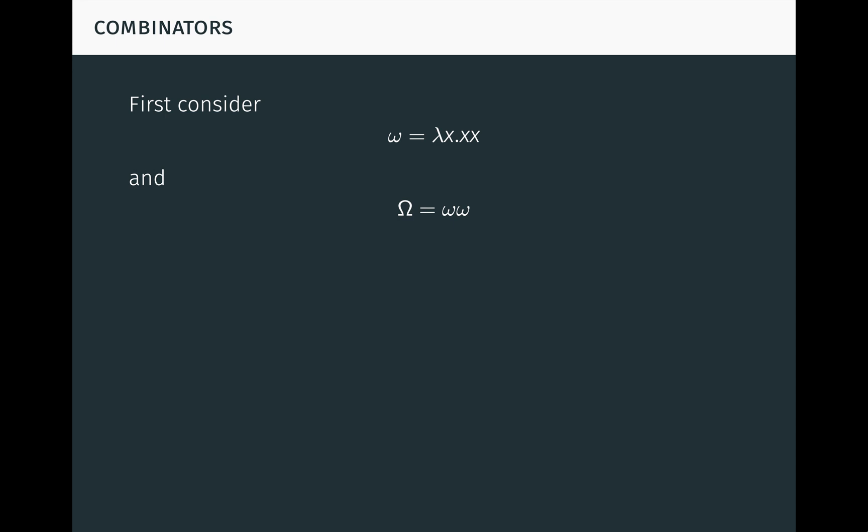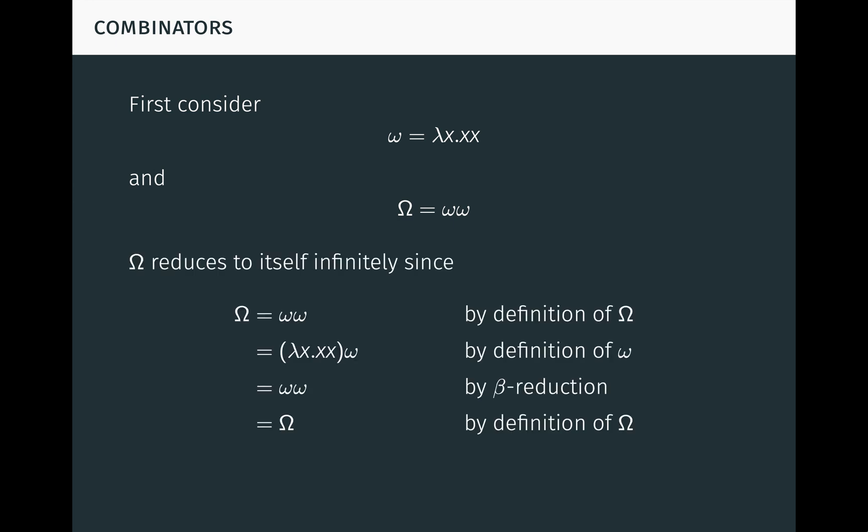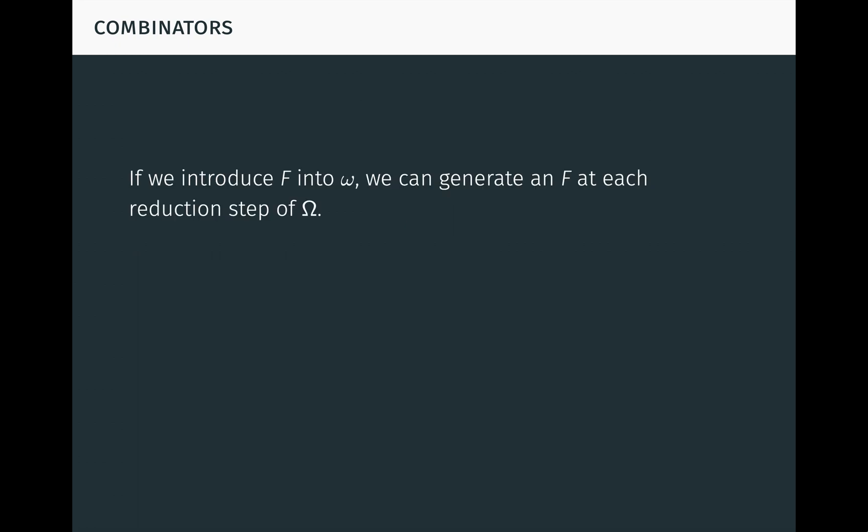But we can construct a term which generates infinitely many f's under reduction. First, consider the term little omega, defined to be lambda x x x, and big omega, defined to be little omega little omega. Notice that big omega reduces to itself infinitely since nothing changes during each reduction step. Again, it's worth pausing the video to think through this.